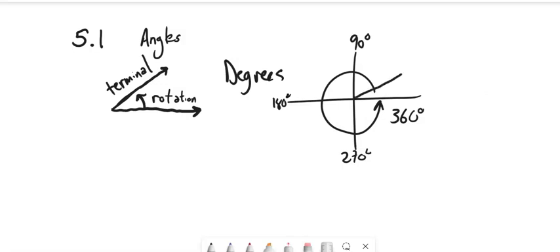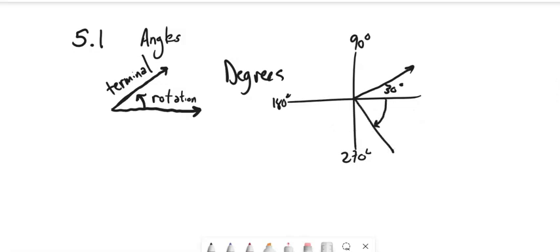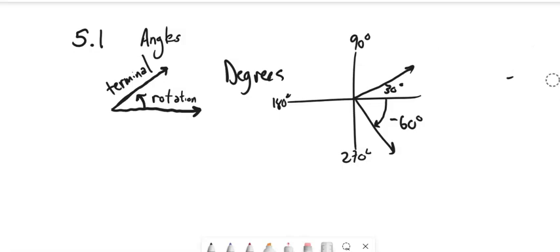So 30 degrees would be about a third of the way to 90. Starting to think of these as fractions, particularly of 180, will help us a lot when we start talking about radians — a different way of measuring angles. Degrees can be other directions too; we could go this direction and say that's negative 60 degrees. Counterclockwise is positive and clockwise is negative as far as angles are concerned.